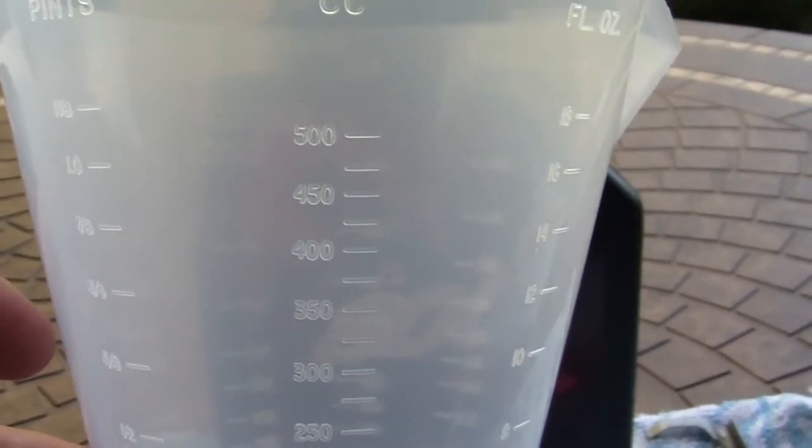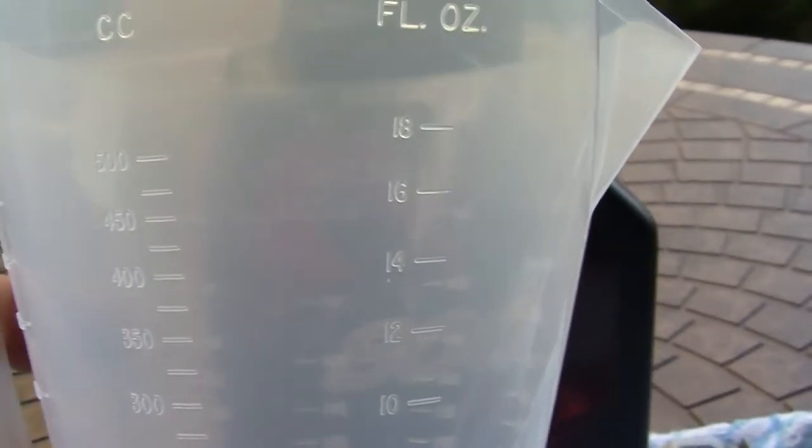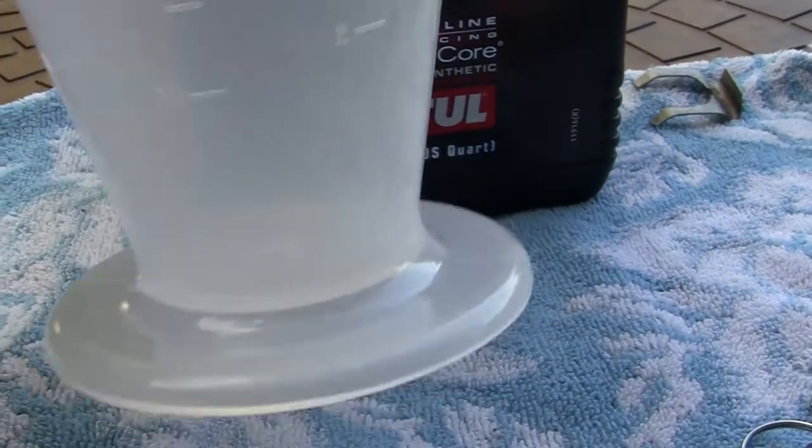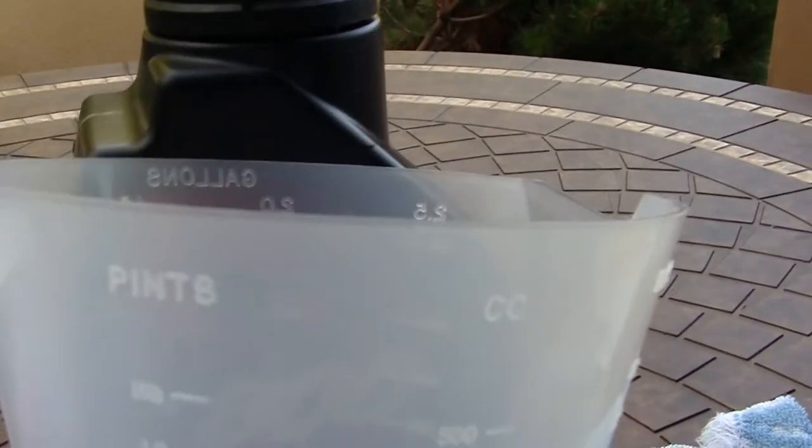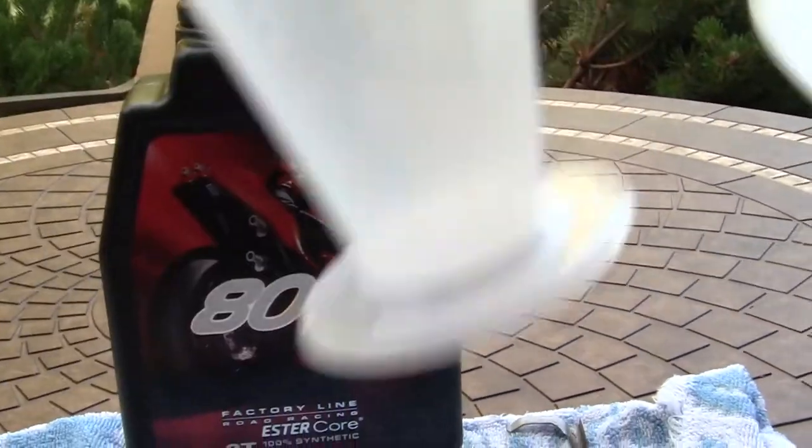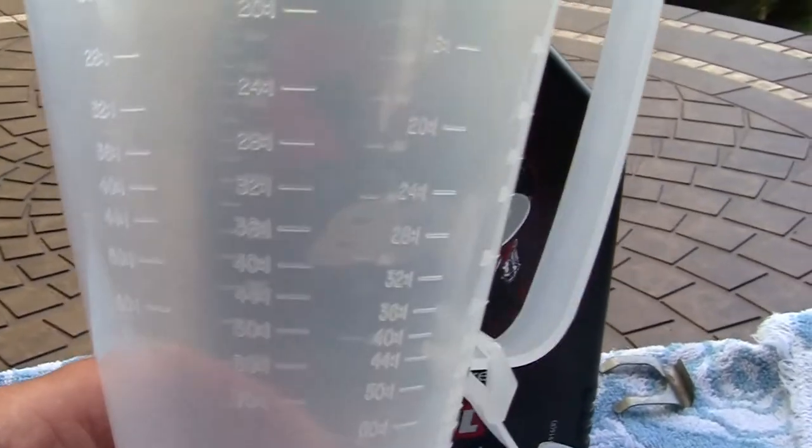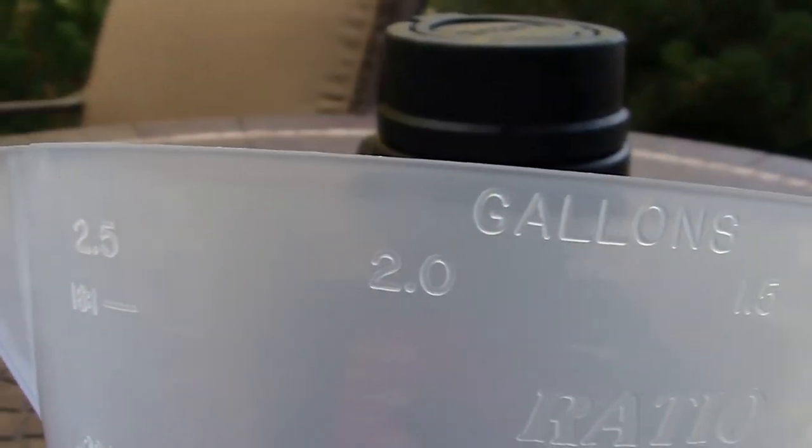So let's start with fluid ounces. We'll show you how many ounces you have in this beaker. CCs, pints, same things. Now your ratios are on the other side, which are more important. And they show your ratios for 2.5 gallons, 2.0 gallons, 1.5, and 1.0.